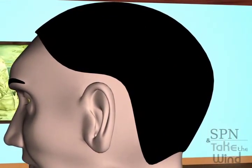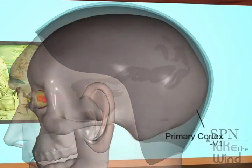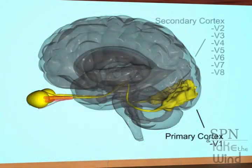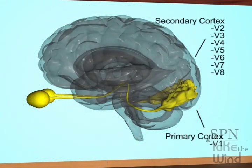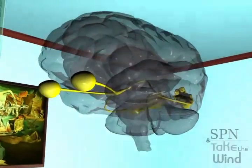Direct visual signals arrive into the primary cortex called the V1 region, which is located in the occipital region of the brain. The secondary visual cortex, which comprises V2, V3, V4, V5, V6, V7, and V8 regions, depends on the V1 region.